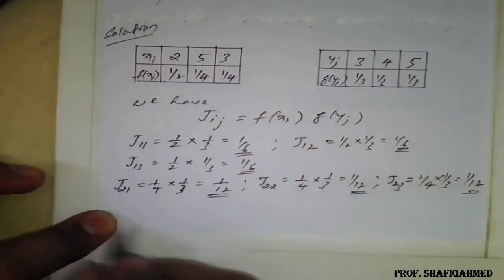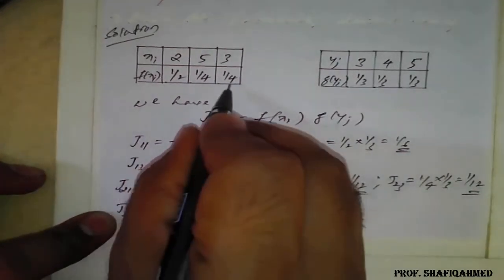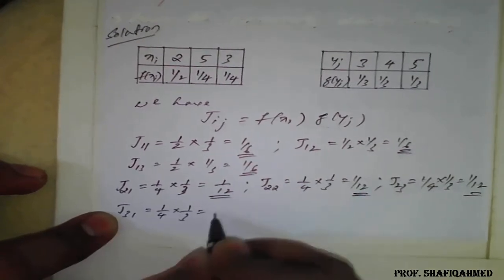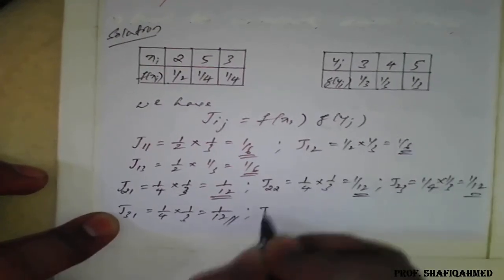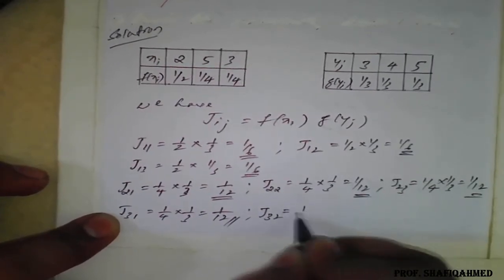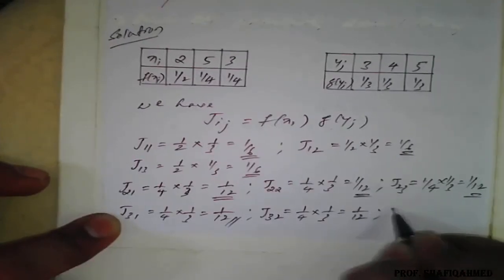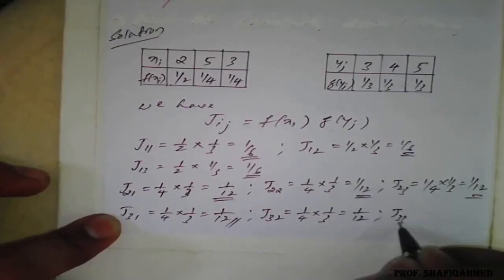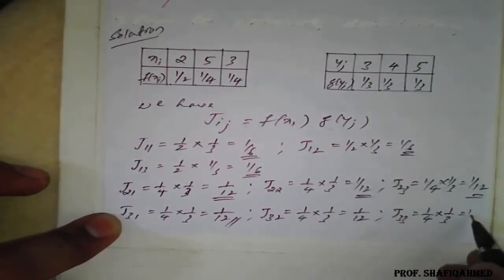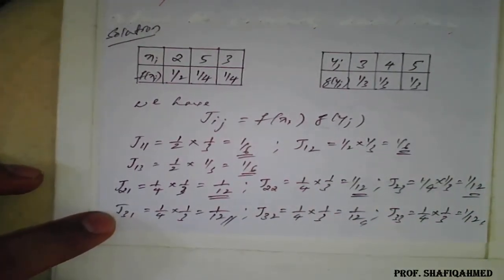We have one more row and one more column. J(3,1) — third row, first column — is 1/4 × 1/3 = 1/12. J(3,2) — third row, second column — is 1/4 × 1/3 = 1/12. And J(3,3) — third row, third column — is also 1/4 × 1/3 = 1/12. These are all the values we need to fill in the table.